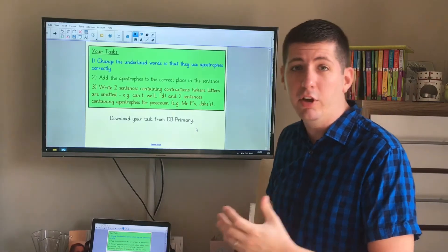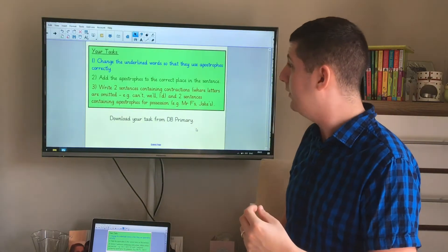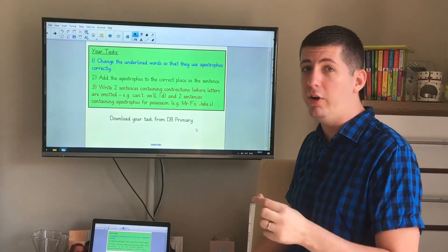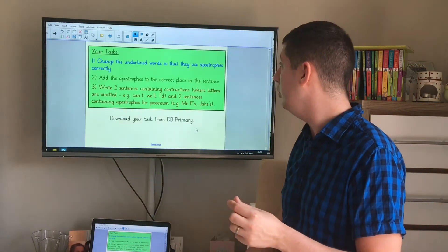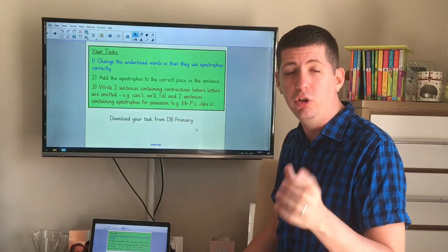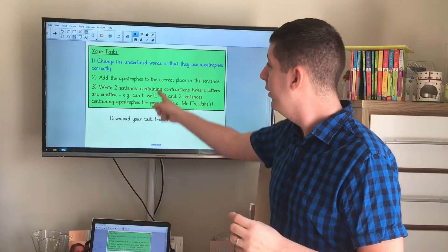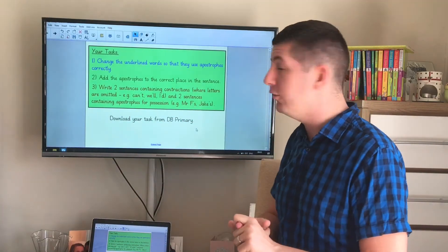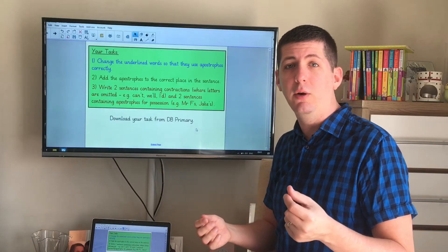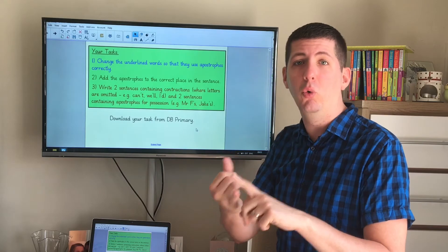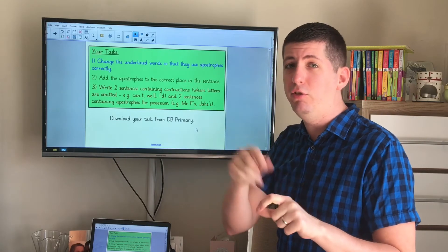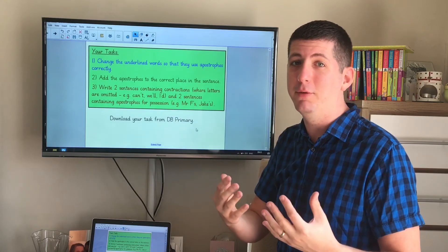So for your tasks I'd like you to go to the U Primary. I'd like to download the activity and on the activity there are three things for you to do. The first thing, I'd like to change the underlined words that are there so that they use apostrophes correctly. They might have used them incorrectly or put them in the wrong place. You need to fix those mistakes. For job number two you need to add the apostrophe into the correct place. So I've written some sentences but I haven't put any apostrophes in at all. You need to work out where the apostrophes go, where there's either letters missing or where something belongs to somebody. But don't put them in the wrong place. Just because you see an S at the end of the word doesn't mean that apostrophe is going to be there, remember.